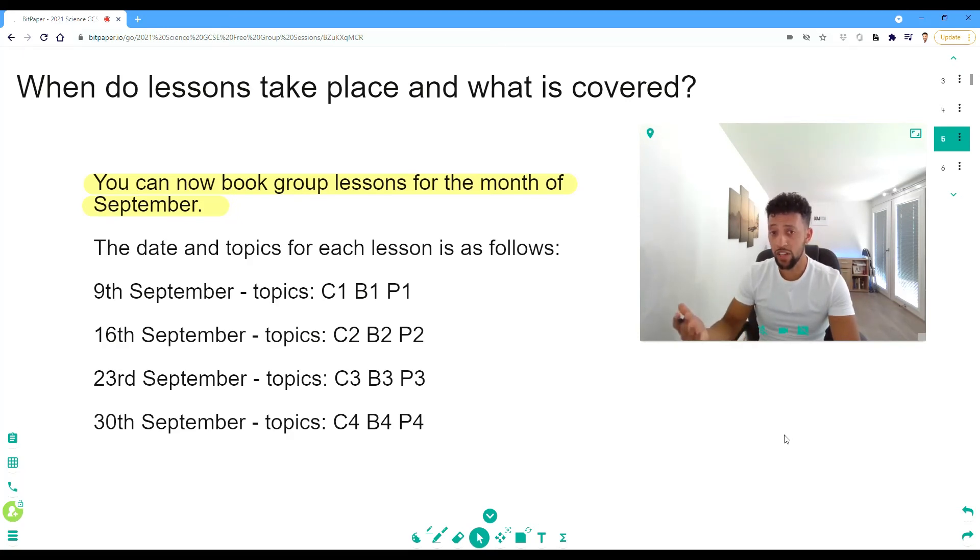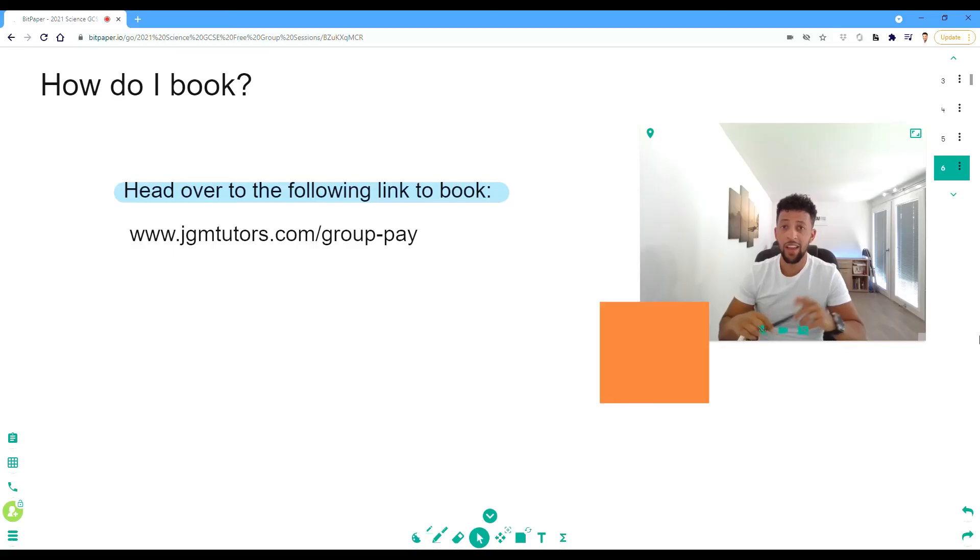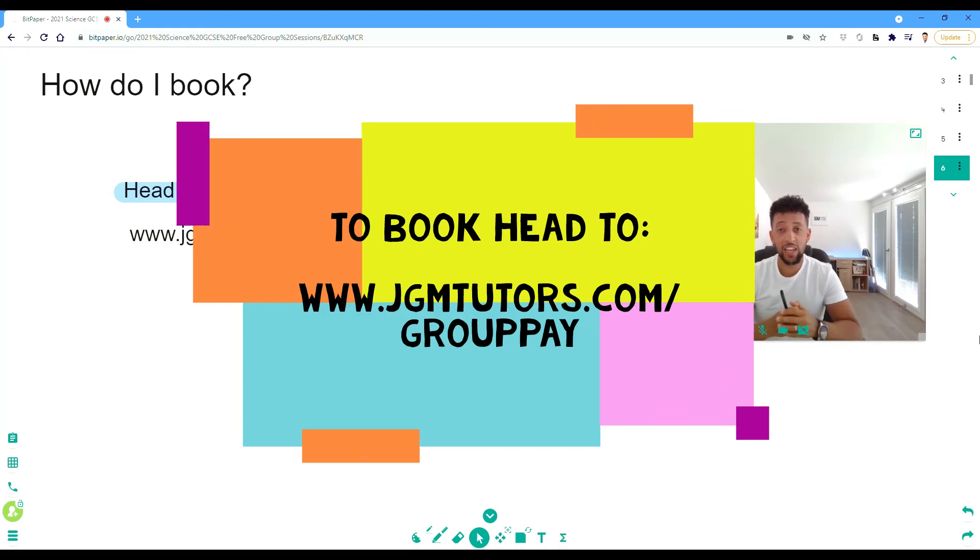Making a booking will give you those four 1.5 hour sessions with the topics you can see there. To book, simply head to our website at jgmtutors.com/grouppay to make a payment by card. If you have any questions, please email us or reach out via WhatsApp, TikTok, or Instagram. Thank you for listening.